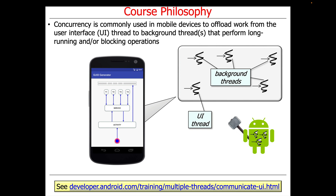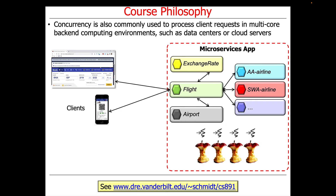Concurrency in these contexts is commonly used in mobile devices to offload work from the user interface thread to background threads that perform long-running and/or blocking operations. For example, in Android, you're only allowed to do non-blocking or short-lived operations in the user interface thread, whereas background threads are capable of doing things like network operations, accessing databases, doing long-running computations, and so on. Concurrency is also commonly used to process client requests in multi-core backend computing environments, such as microservice architectures found in modern data centers or cloud server contexts.